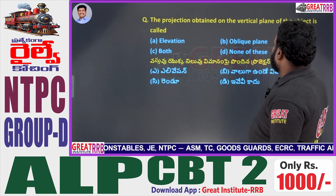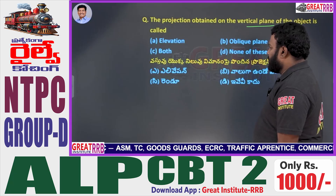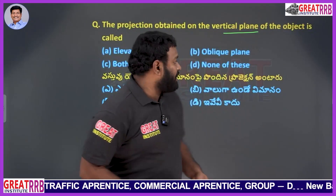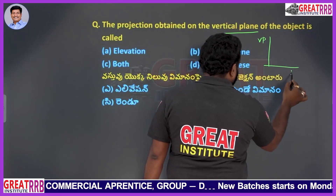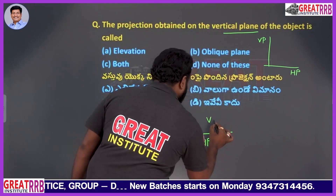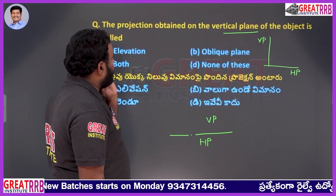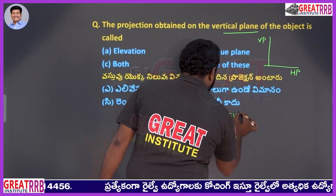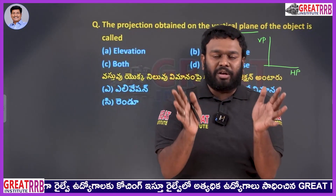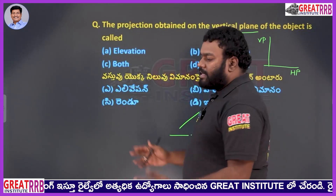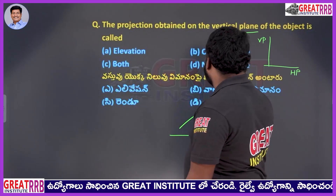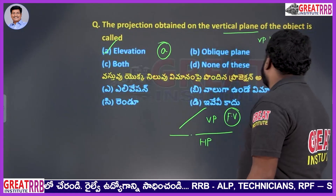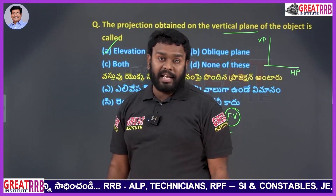The projection obtained on the vertical plane of the object is called: A elevation, B oblique plane, C both, D none of the above. In first angle projection, the VP gives the front view. The front view on the vertical plane is called elevation. Oblique plane is totally different — it is inclined. So option A, elevation, will be the right answer.